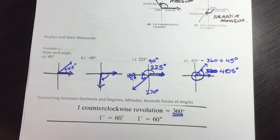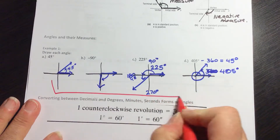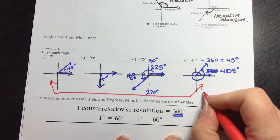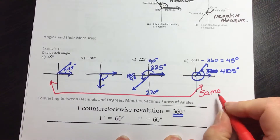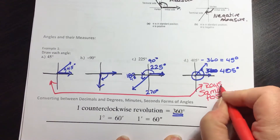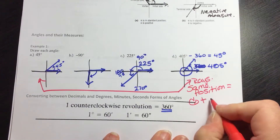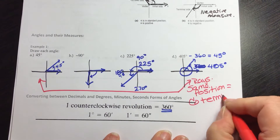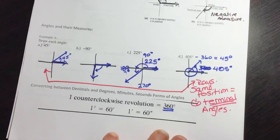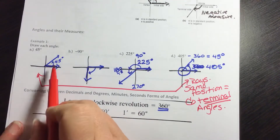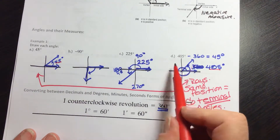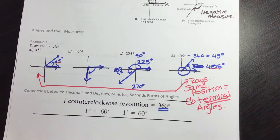Notice that the first and last angles look the same — the rays are in the same position. We call those co-terminal angles: that's when the terminal side is in the same position. They have different measures, 45 degrees and 405 degrees, but they look the same because their terminal side is in the same position.